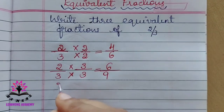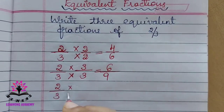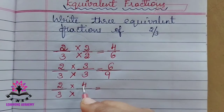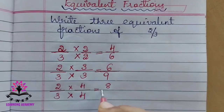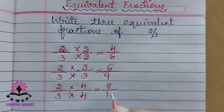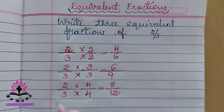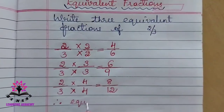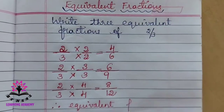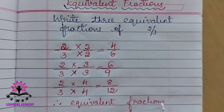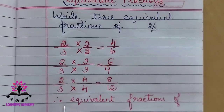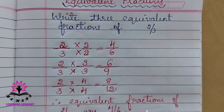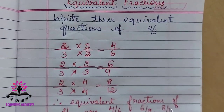Again, write 2/3 as it is and multiply the numerator and denominator by four. Two fours are eight, three fours are twelve. Therefore, we can write the equivalent fractions of 2/3 as: 4/6, 6/9, 8/12.